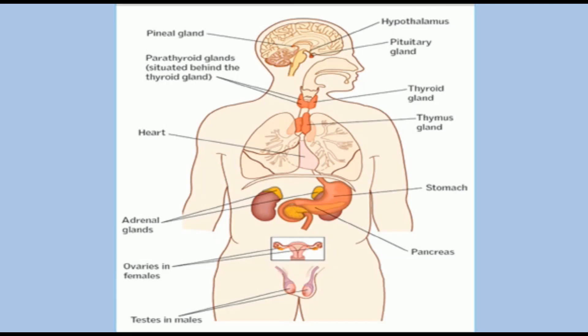The metabolic effects of different systems of the body are controlled by the autonomic nervous system and secretions of endocrine glands. Glands are part of the body which secrete chemical substances including hormones and enzymes. Glands are of two types: endocrine and exocrine. Endocrine glands secrete hormones directly released into the bloodstream; exocrine glands secrete enzymes that flow via a duct. Some glands act as both endocrine and exocrine and are called mixed glands.